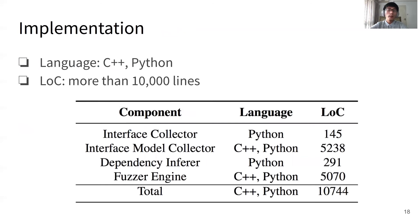As for implementation, we mainly use C++ and Python. We use more than 10,000 lines of code to implement the prototype of FANCE.